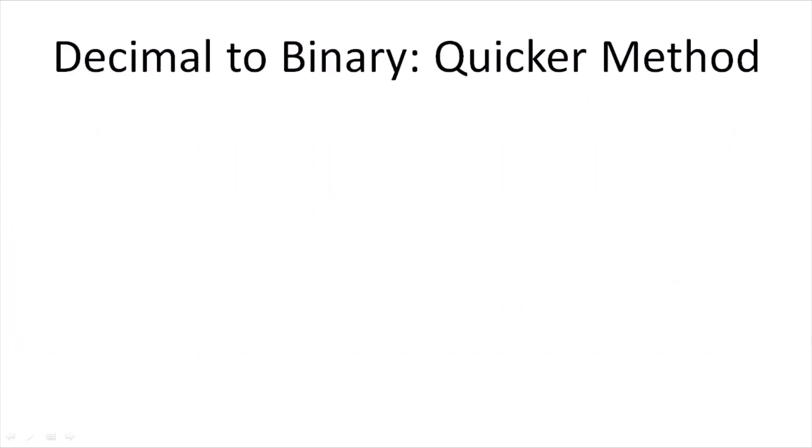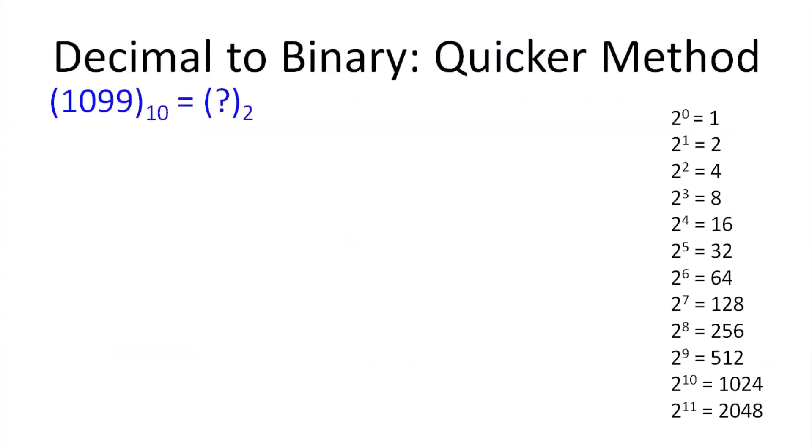Let us first look at a very quick and easy method by which we can convert a decimal number to its binary equivalent. Say we want to find the binary equivalent of the decimal number 1099.